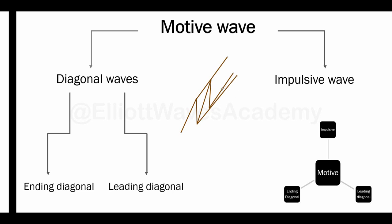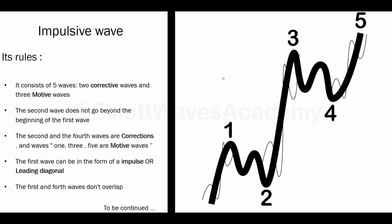Here you can see the shape of an impulsive wave that includes its sub-waves from the lower degree, as we spoke in the last lesson. From the left of the page we can see some rules. The first rule is about the internal structure of the impulsive wave, which says this wave consists of five waves — two waves that are corrections and three waves that are motive waves. Wave 2 and Wave 4 are corrections, and Wave 1, 3, and 5 are motive waves.